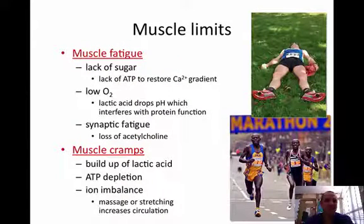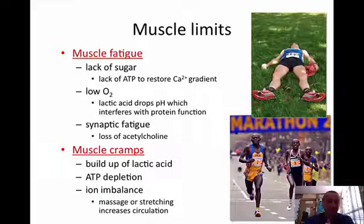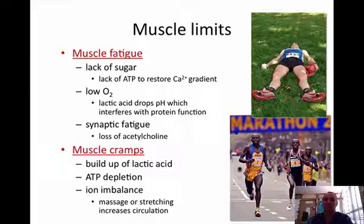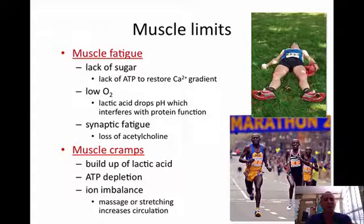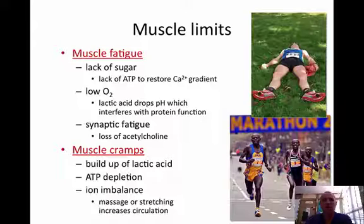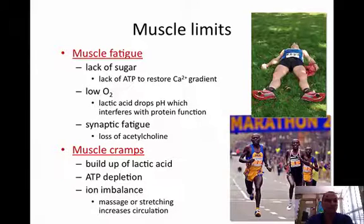When we talk about muscle fatigue, it just means the muscle lacks sugar or lacks ATP. If you lack ATP, you can't restore the calcium gradient. If you can't restore the calcium gradient, sometimes you'll get a contraction that stays there for a while, or you can't contract at all. Low oxygen could also cause muscle fatigue because lactic acid drops the pH and interferes with protein function. Then you may have synaptic fatigue — a loss of acetylcholine or something taking its place.